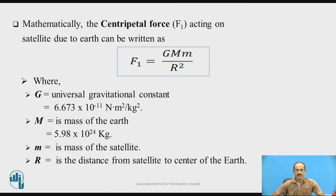Now, we shall see these two forces mathematically. The centripetal force F1 acting on the satellite can be written as F1 = G·M·m / R², where G is the universal gravitational constant equal to 6.673 × 10⁻¹¹ N·m²/kg², capital M is the mass of the earth equal to 5.98 × 10²⁴ kg, small m is the mass of the satellite, and R is the distance from the satellite to the center of the earth.